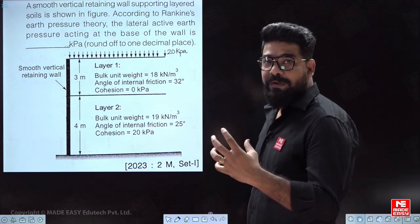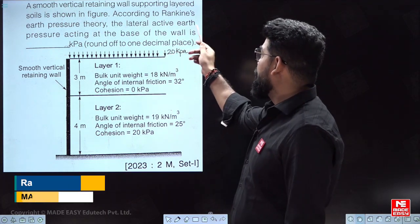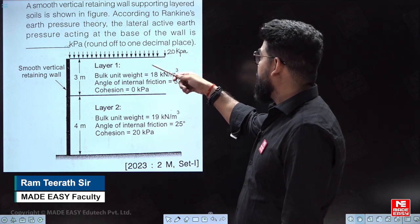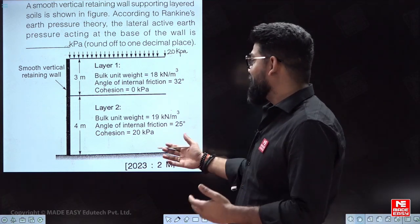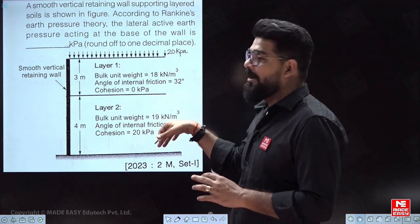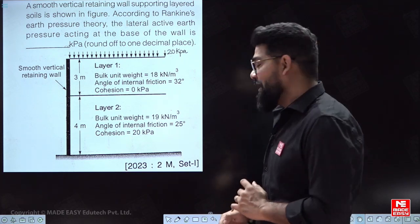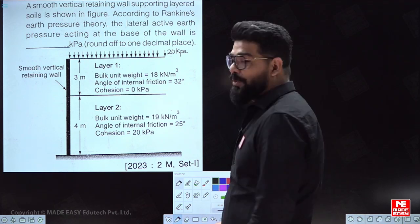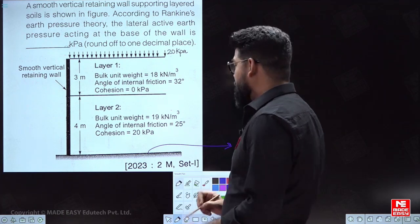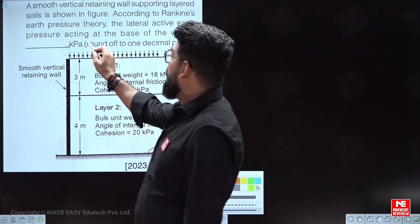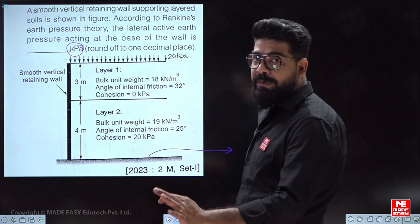The point to be noted is that whenever we solve questions, we have to read the question properly. The question involves a smooth vertical retaining wall with layered soil according to Rankine earth pressure theory, asking for the lateral earth pressure acting at the base of the wall in kilopascals. When this question came, many students made the mistake of drawing the full earth pressure diagram and determining total earth pressure by taking the area. That is the biggest mistake, because the question is simply asking for the earth pressure at the base — in kilonewton per meter square — that's all.